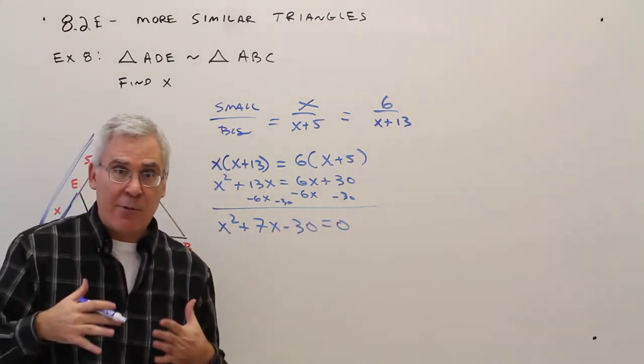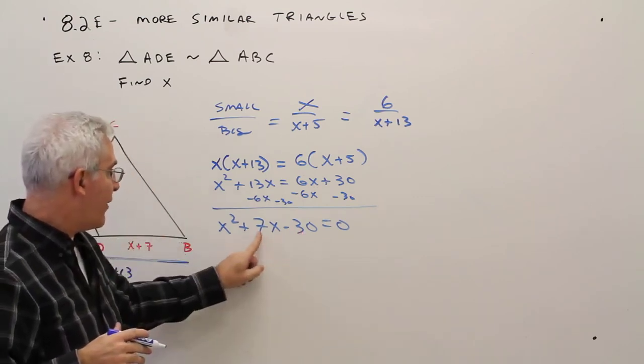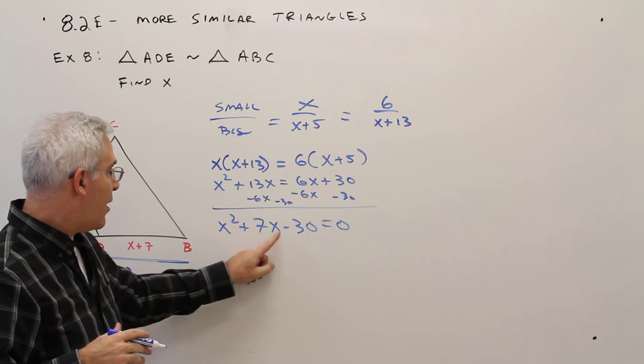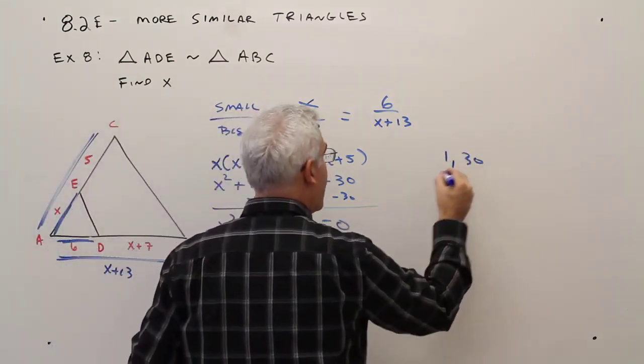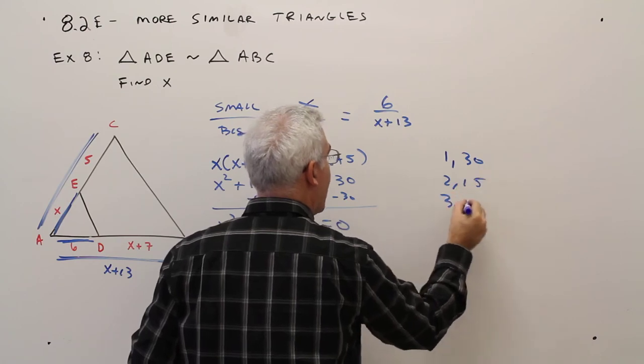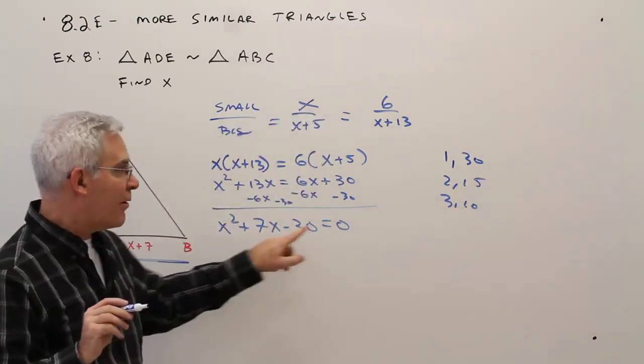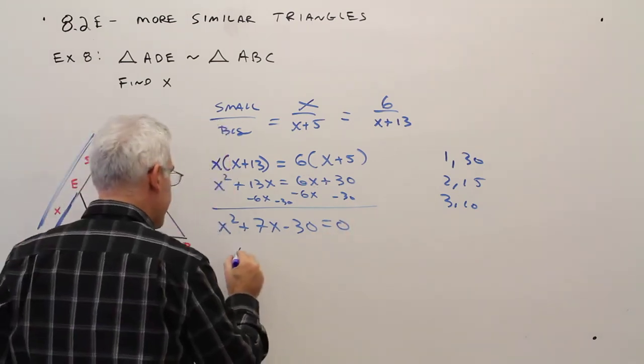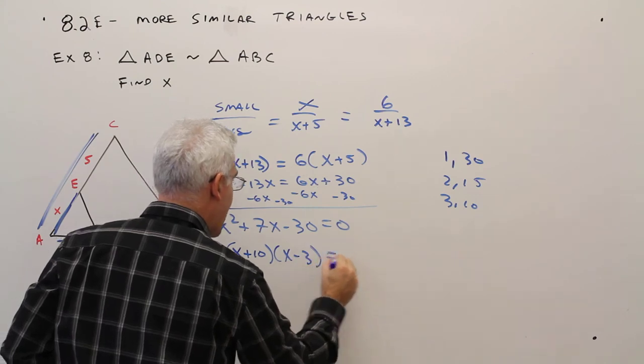That's standard form. Now you want to hope that it's factorable. Two numbers with that product and that sum. Let's see here. If you want you can make a list. 130, 215, oh, 310 looks promising. I want it to be more positive. So X plus 10 times X minus 3 equals zero.